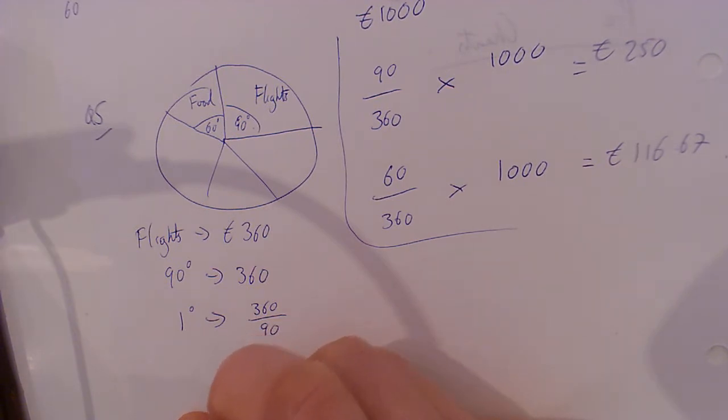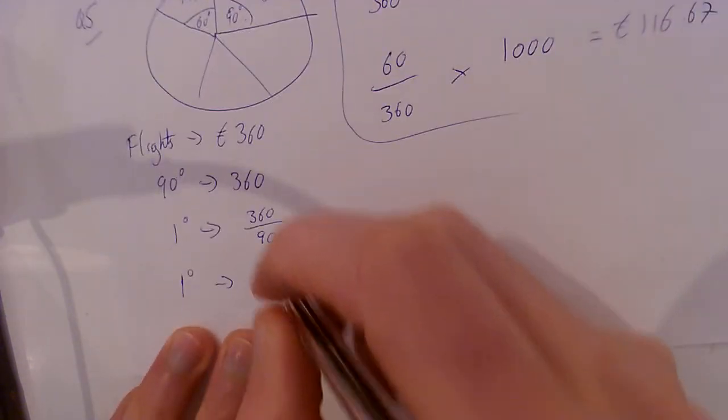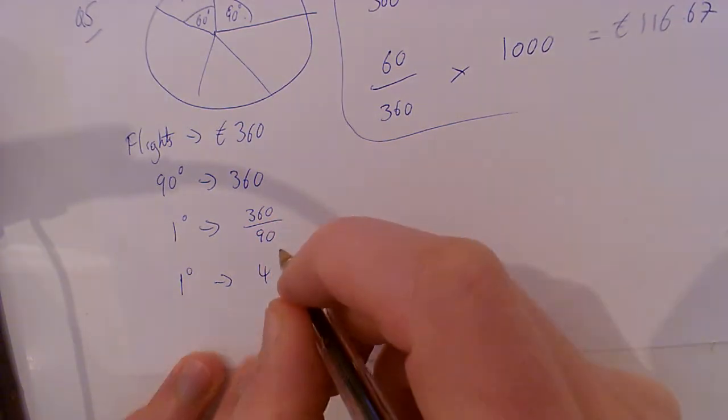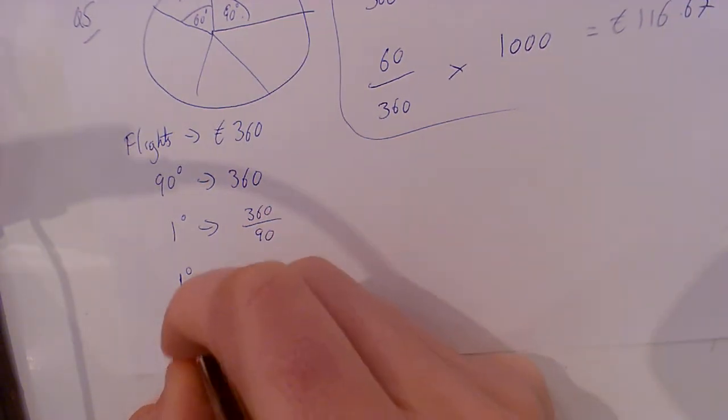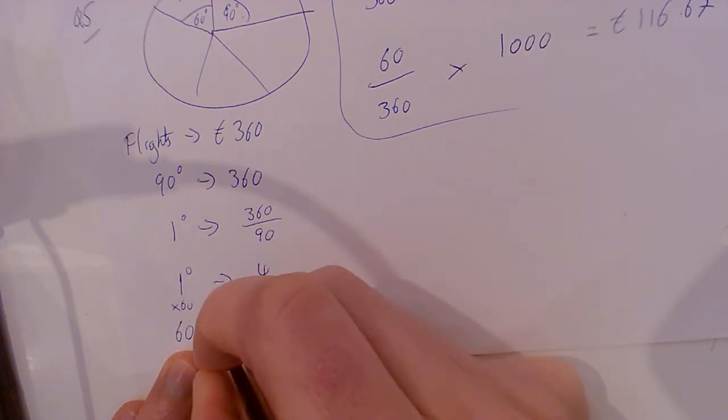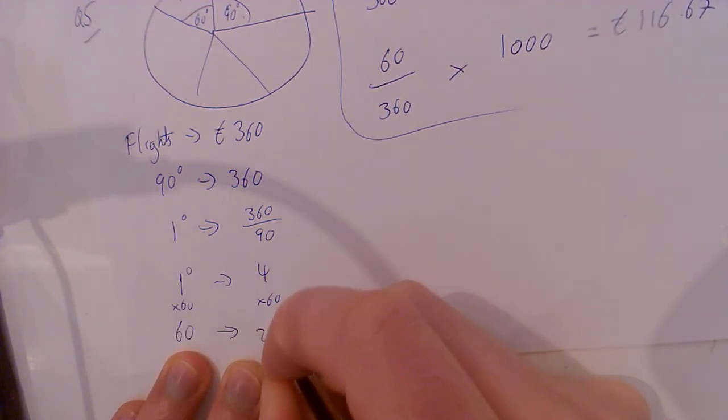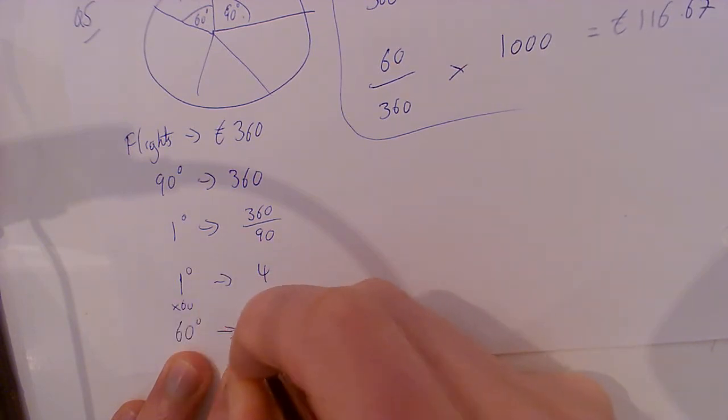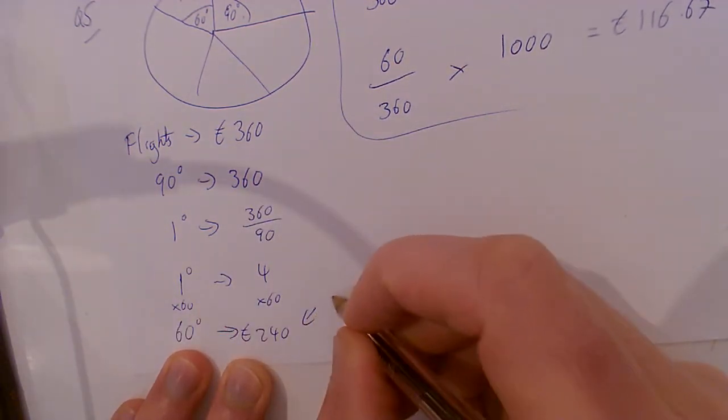Just like an equal sign, divide both sides by 90. So one degree is 4. So what's 60? Well, multiply this by 60 and multiply this by 60, and that would be 240. So the food would be 240. That's all there is to that.